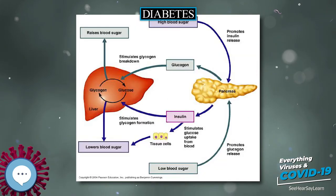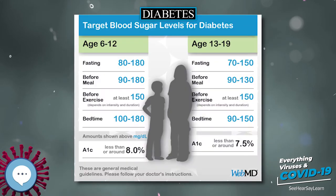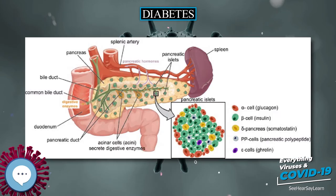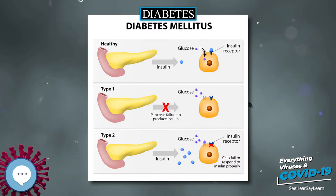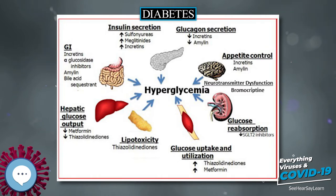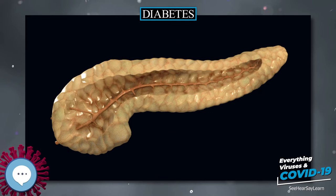Type 1 diabetes is partly inherited, with multiple genes, including certain HLA genotypes, known to influence the risk of diabetes. In genetically susceptible people, the onset of diabetes can be triggered by one or more environmental factors, such as a viral infection or diet. Several viruses have been implicated, but to date there is no stringent evidence to support this hypothesis in humans. Among dietary factors, data suggest that gliadin, a protein present in gluten, may play a role in the development of type 1 diabetes, but the mechanism is not fully understood.